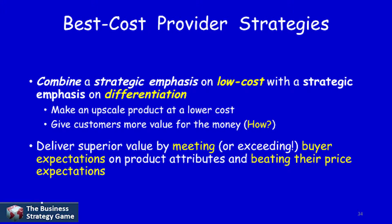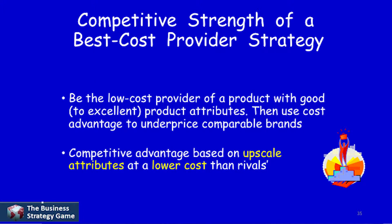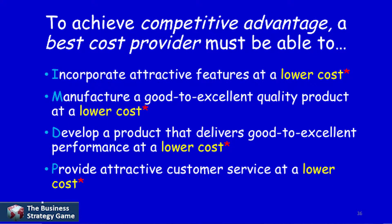So we're trying to constantly exceed what the buyer expects to get out of the product by giving them more benefits. Your competitive strength as the Best Cost Provider is to be the low cost provider of the product with good to excellent product characteristics, and then take that cost advantage to underprice your competitors. At the same time, have a competitive advantage based on upscale attributes at a lower cost than your rivals. So to achieve that competitive advantage, a Best Cost Provider has to be able to incorporate attractive features at a lower cost, manufacture a good to excellent product at a lower cost, develop a product that delivers good to excellent performance at a lower cost, and provide attractive customer service at a lower cost.